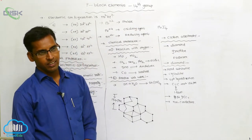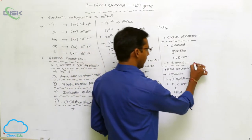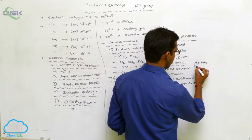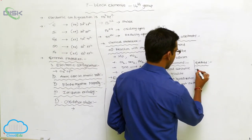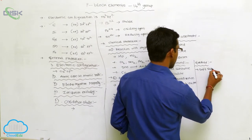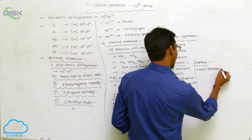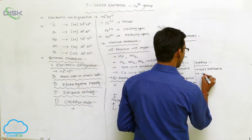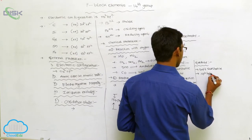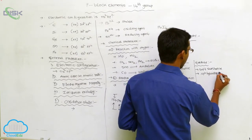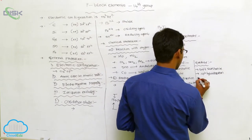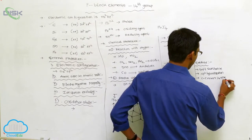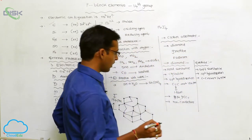Graphite is a soft substance and is also a crystalline allotropy. It undergoes sp2 hybridization. Its C-C bond distance is 149 pm.